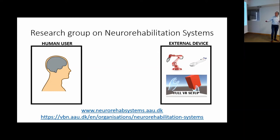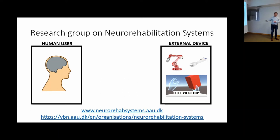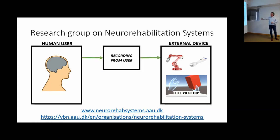On the left side of this interface, you have a human user — it could be a disabled subject, for example an amputee or a stroke subject, but it could also be a healthy person. On the other side, you have external devices that this person would like to control: collaborative robotics in industrial settings, a prosthesis if we are working with amputees, or virtual reality. Our main goal is to effectively connect the human user to the device by recording signals from the human user and translating those signals into commands for the device.